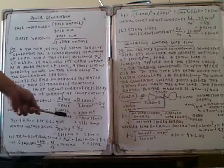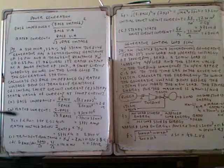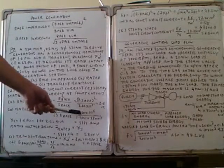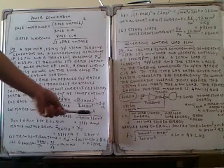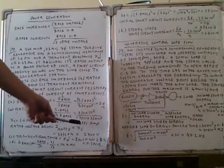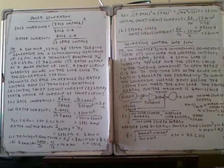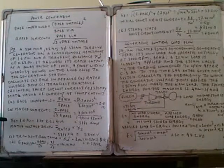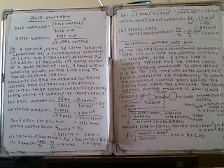We can also calculate the rated current. The base MVA is 250 × 10⁶, divided by root 3 times the base voltage of 25 × 10³, giving a rated current of 5,771 amperes.